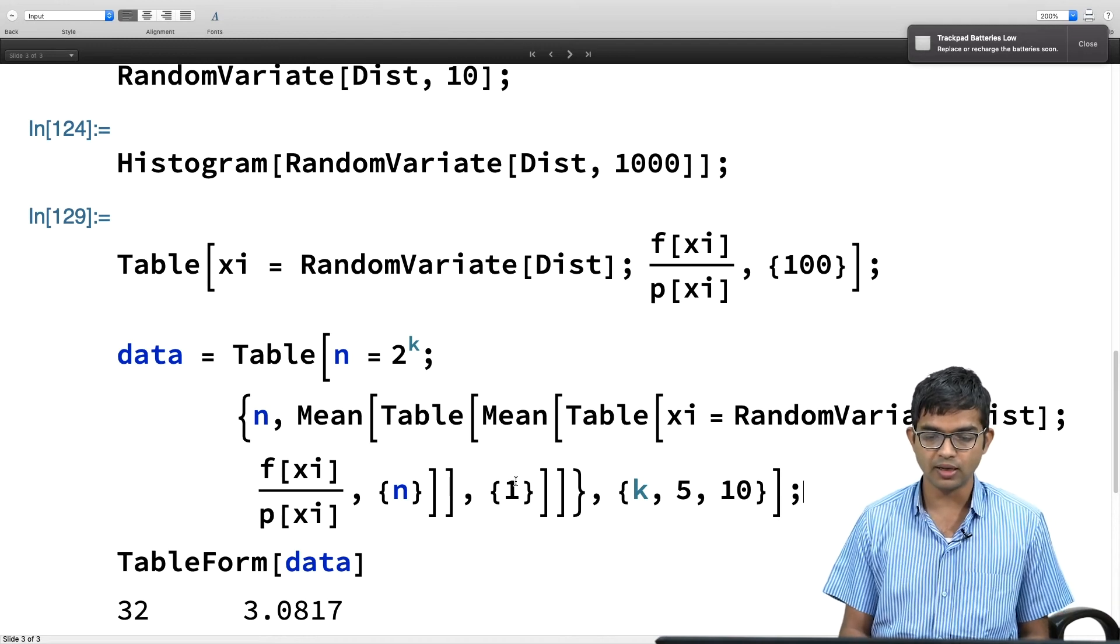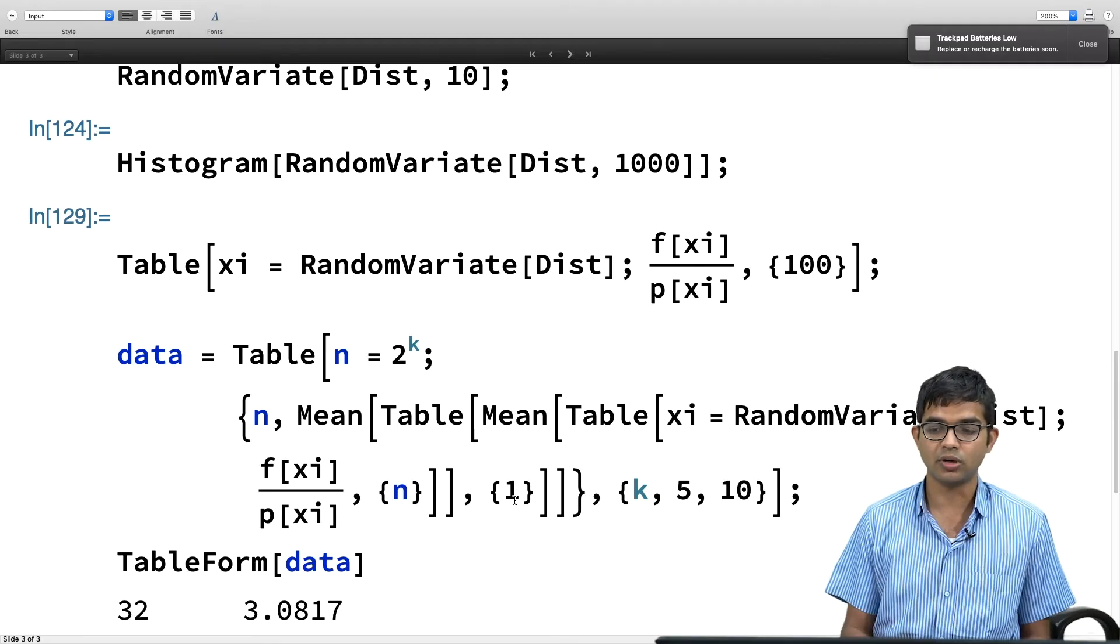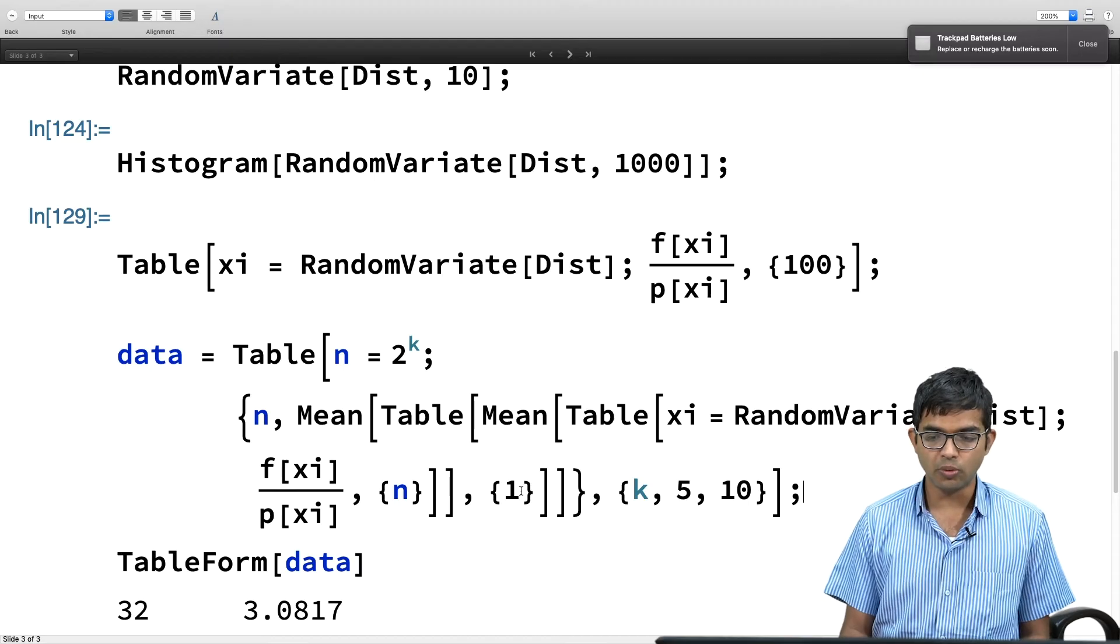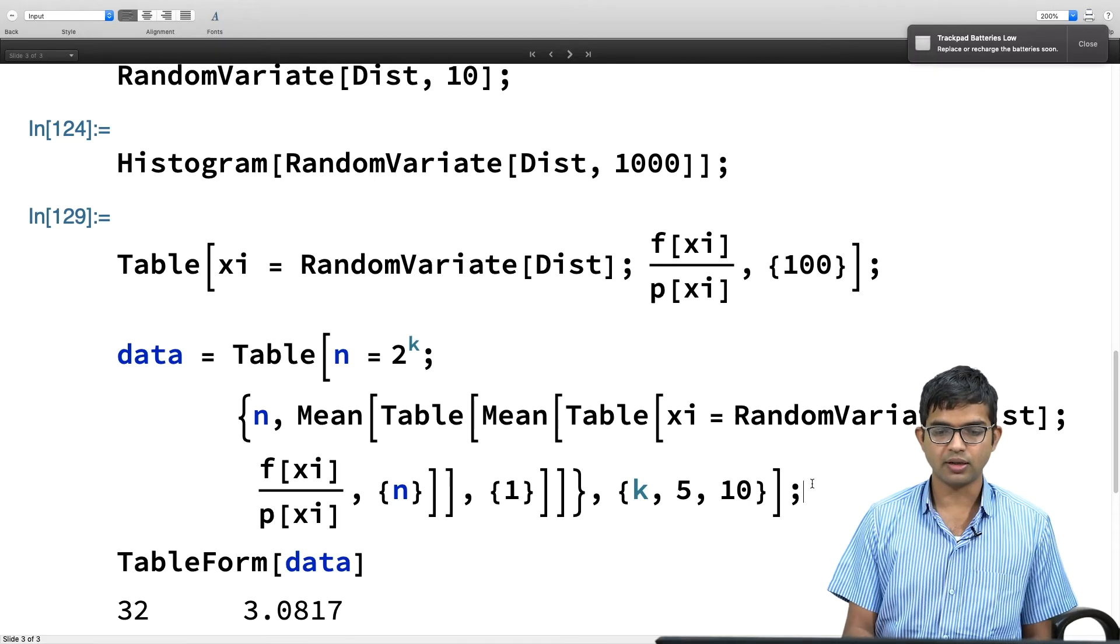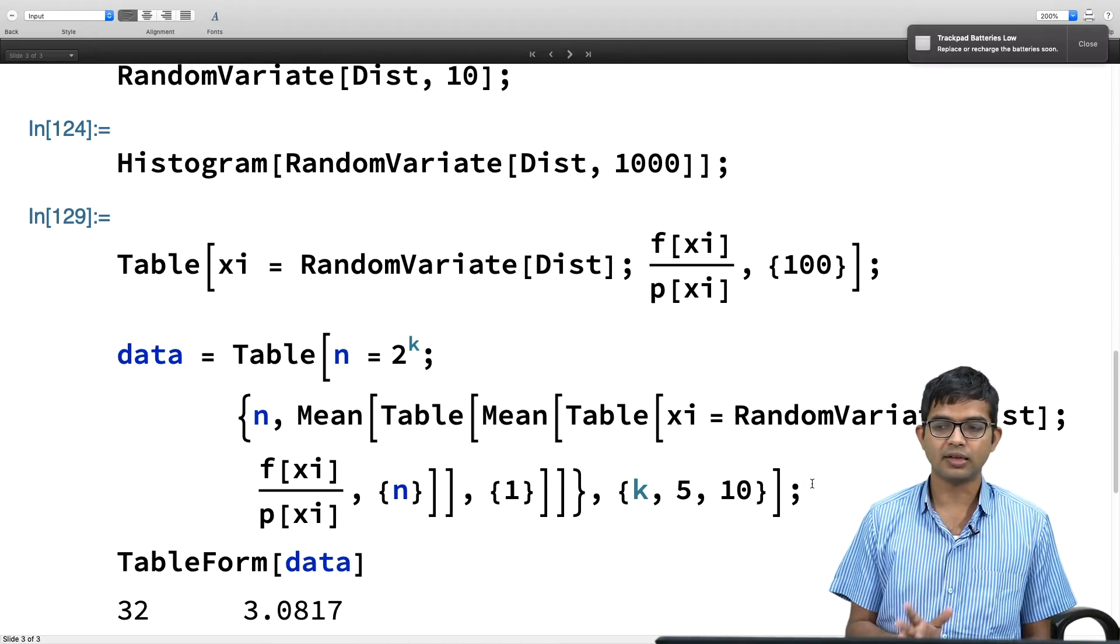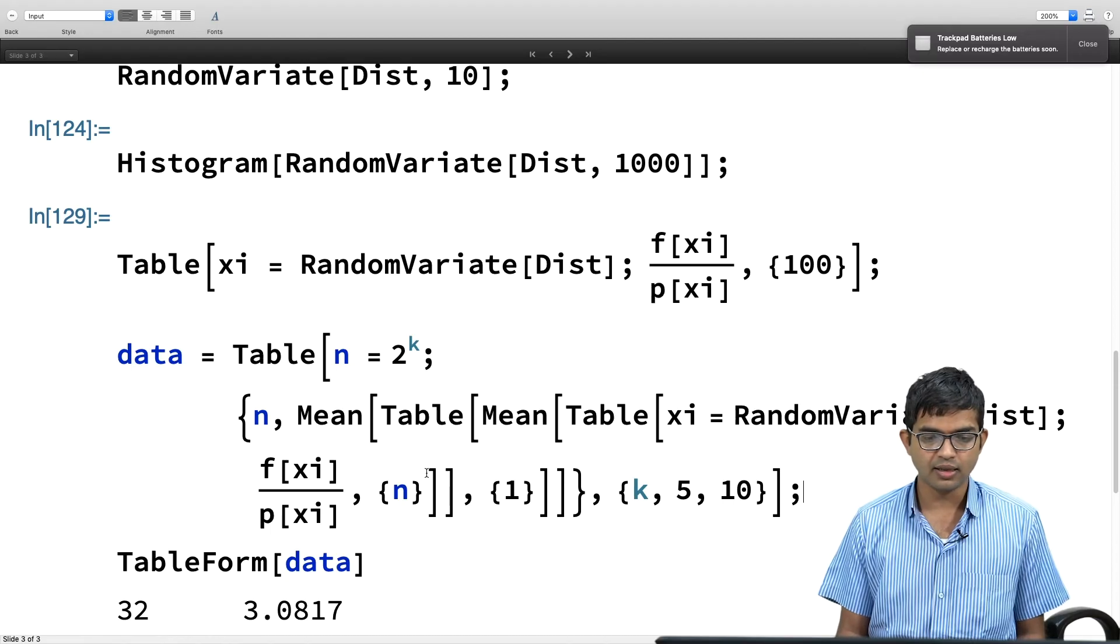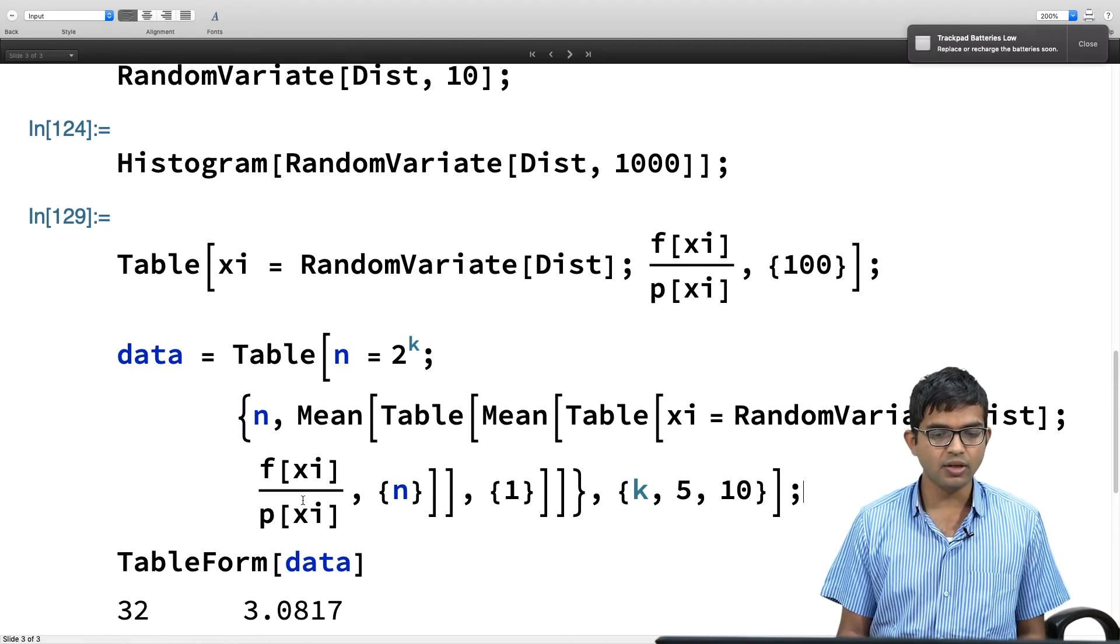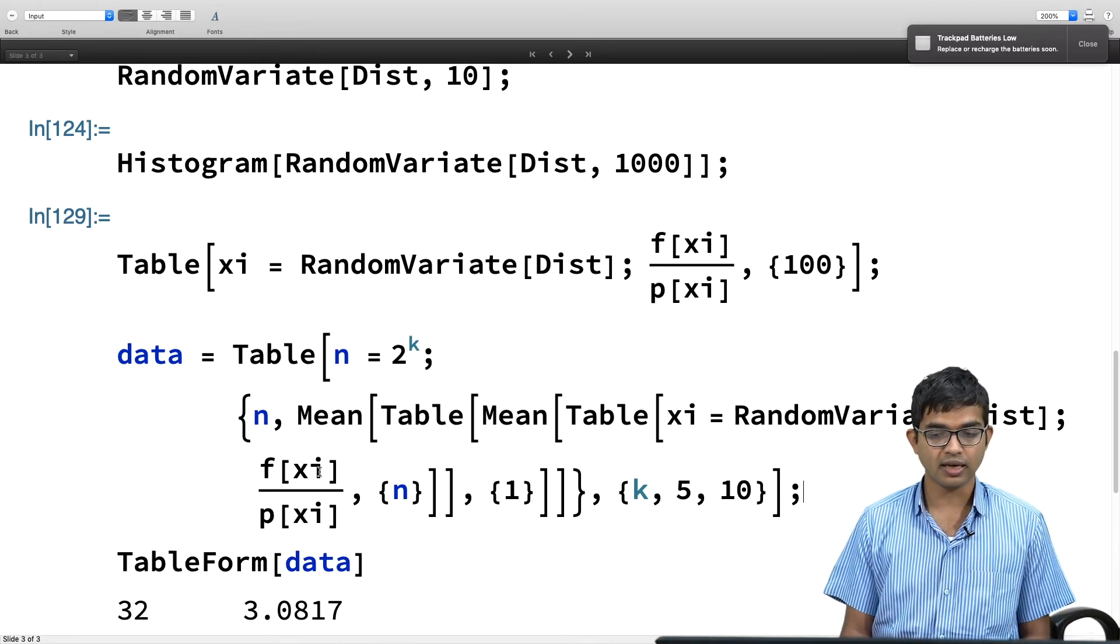That is what I have done here. If I do a histogram of this, you see that indeed it is falling off. The probability that it is a value close to 0 is indeed higher. This is an exponentially dropping distribution. I can do even larger and then you see that it is an exponential. It is a reasonable looking histogram. Now what I want to do is finally, my Monte Carlo method comes in. I will create a table of x_i equal to random variate of distribution.